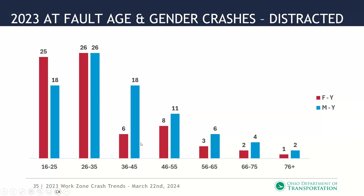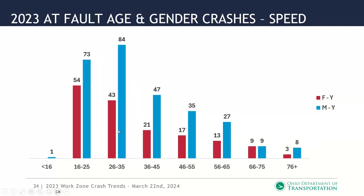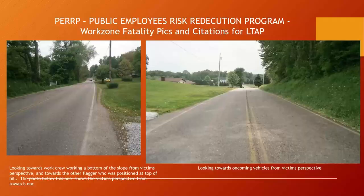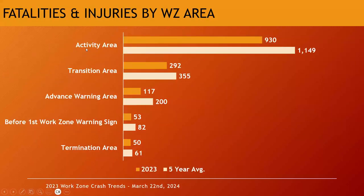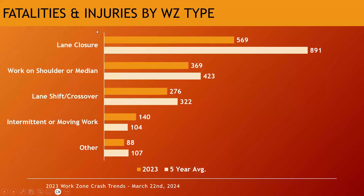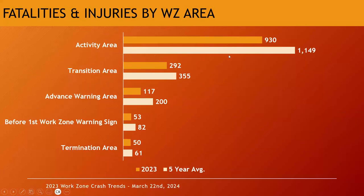A question comes in asking what kind of work zones have the most fatalities. Ray says it's coming up in the statistics. Looking at work zone type, lane closure work zones had the highest number of crashes. Fatalities and injuries are most common in the activity area of work zones, so a lane closure with an activity area would be the answer. They also broke down at-fault drivers by age group for drug-related work zone crashes — males from 26 to 35 were again the highest category.